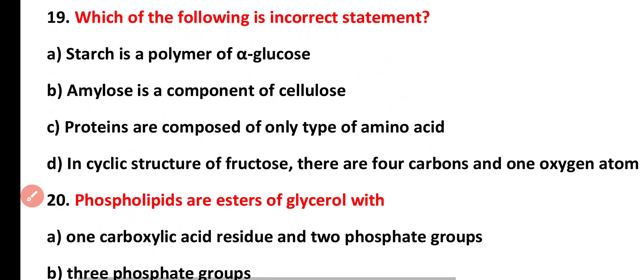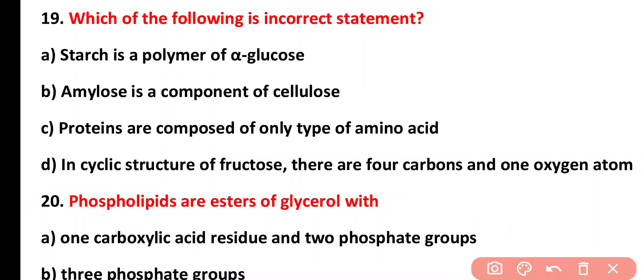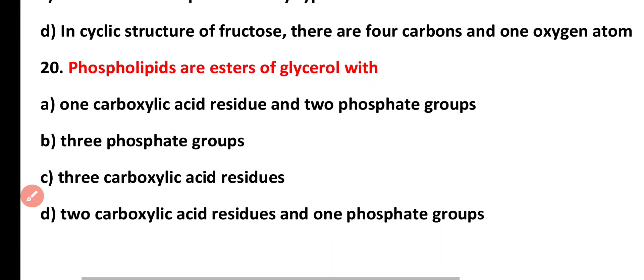Question nineteen: which of the following is an incorrect statement? Option A: starch is a polymer of alpha-glucose. Option B: amylose is a component of cellulose. Option C: proteins are composed of only one type of amino acids. Option D: in the cyclic structure of fructose, there are four carbon atoms and one oxygen atom. The correct statement is option A: starch is a polymer of alpha-glucose.